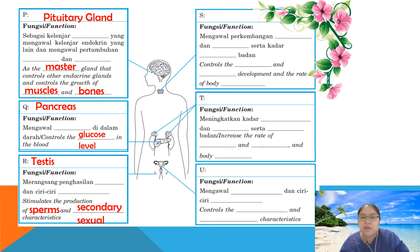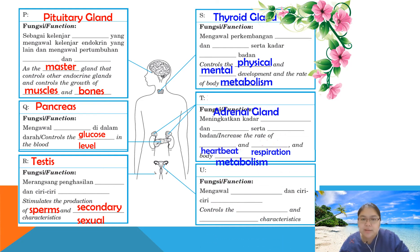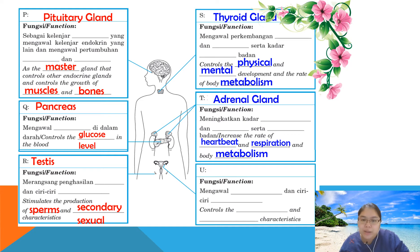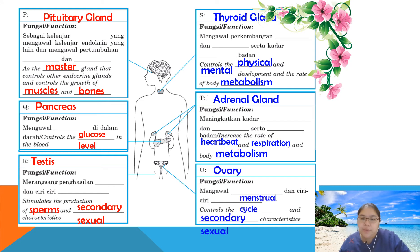Gland S is the thyroid gland, which controls physical and mental development and the rate of metabolism. Gland T is the adrenal gland, which increases the rate of heartbeat, respiration, and body metabolism — it activates during an emergency, causing your heartbeat to increase. The last gland is the ovary (for female), which produces oestrogen and progesterone. The functions include controlling the menstrual cycle and secondary sexual characteristics.